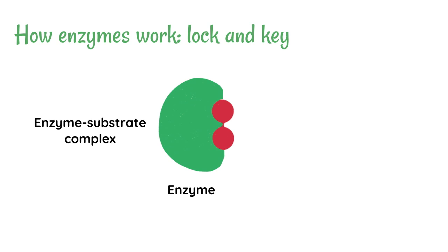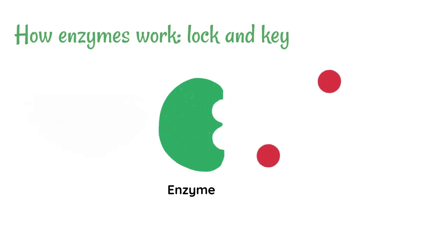What basically happens is the bonds that are joining those bits of the substrate together get weakened. It's easier to break up those bonds once it's become joined to the active site. This allows the pieces to become separated, and now we've got products.